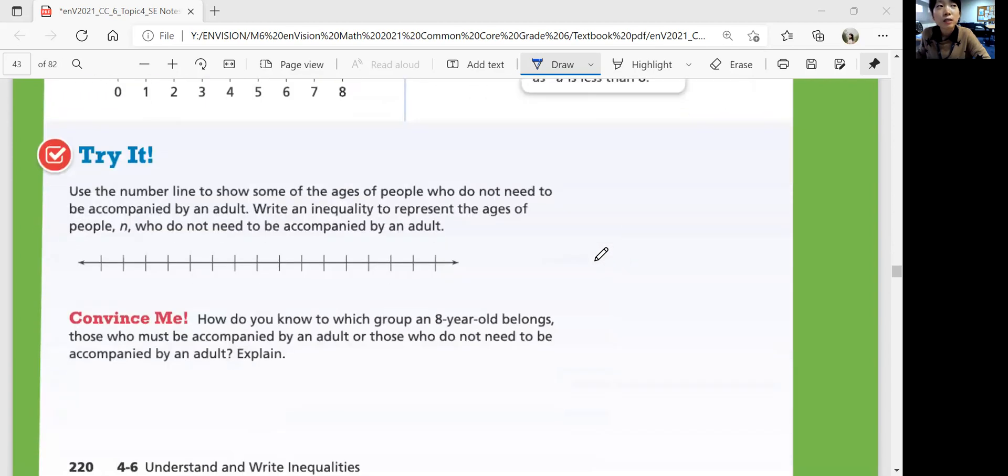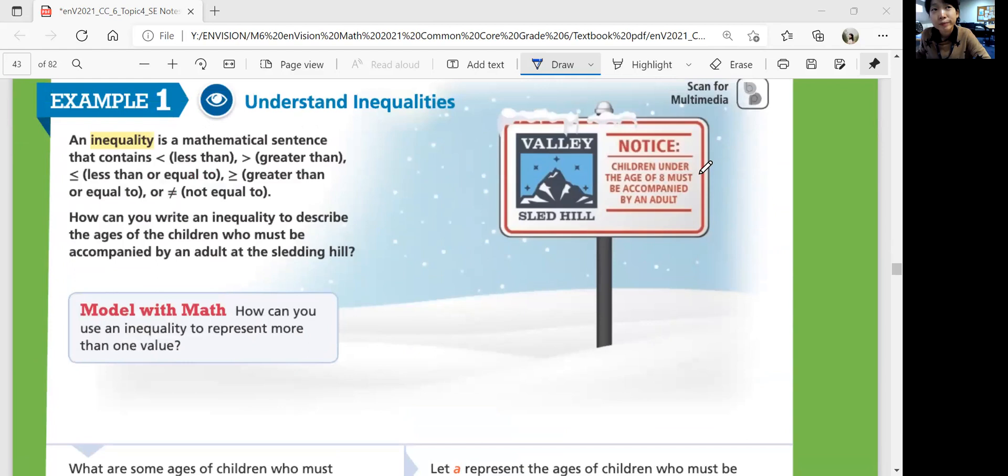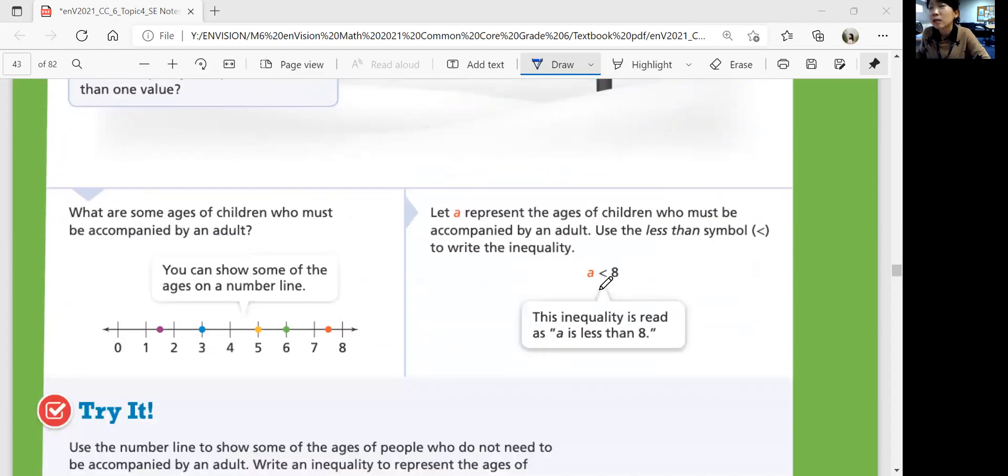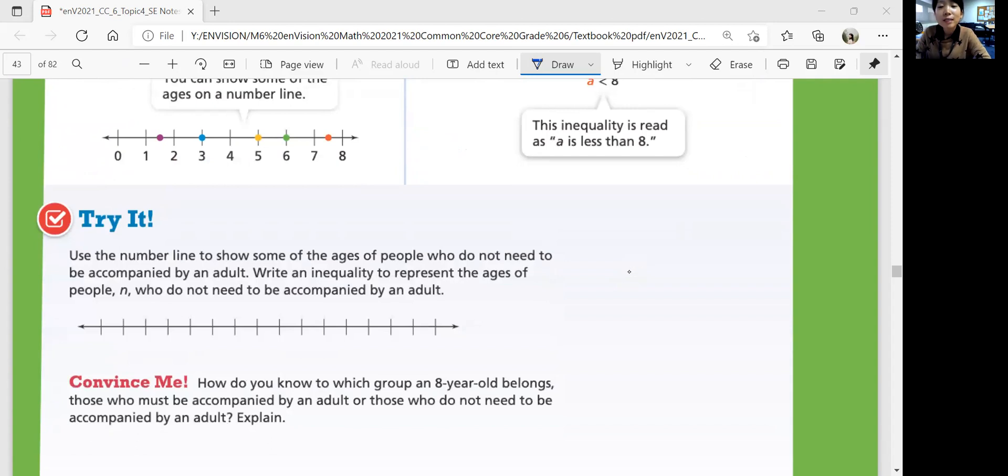Let's look at try it question. Use the number line to show some of the ages of people who do not need to be accompanied by an adult. Write an inequality to represent the ages of people who do not need to be accompanied by an adult. So if you're exactly 8, do you still need an adult or are you okay? It says under the age. If it's less than 8, it doesn't include 8.